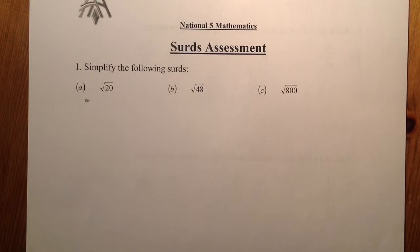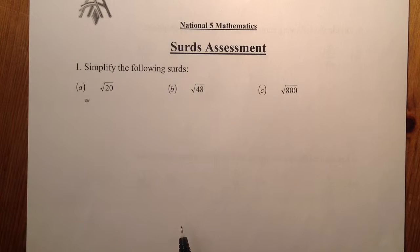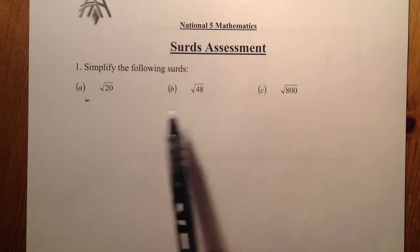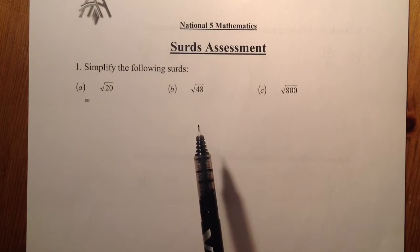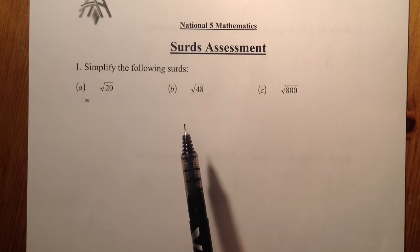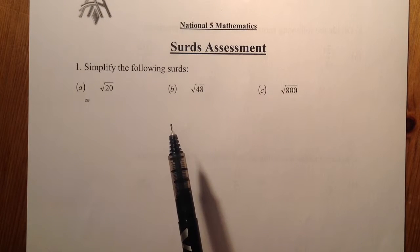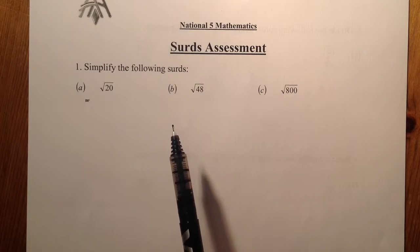This is National 5 Maths. We're looking at the solutions to the surd assessment. We've got 5 questions and 6 marks per question, so that's a total of 30 marks for this assessment. When we're simplifying surds, remember we're looking for square numbers to help us out, and for this clip I'm going to go reasonably quickly through the questions.